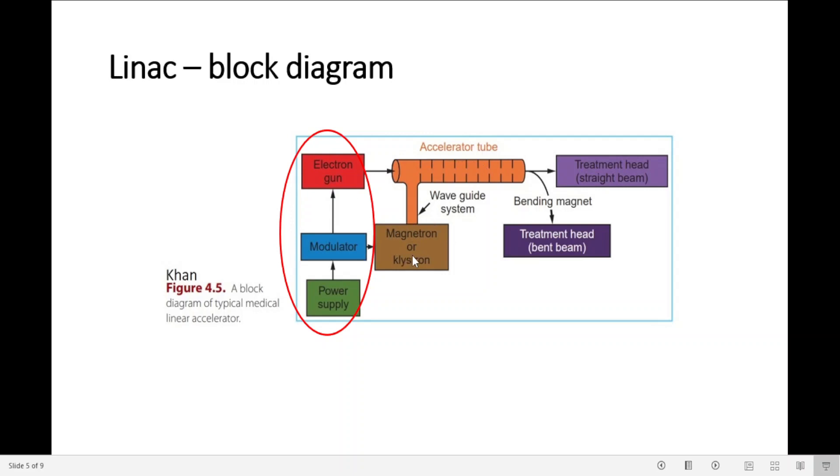The high power oscillator system depends on the LINAC design. The system will either have a magnetron or a klystron. It will not have both. It's either or. The magnetron is a microwave generator. It is, by itself, a high power oscillator.